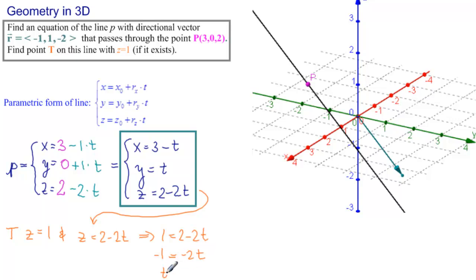So t equals minus 1 over minus 2, or t equals 0.5, one half. So we get t equals one half.